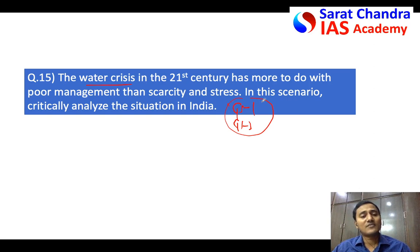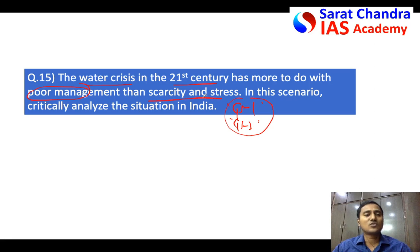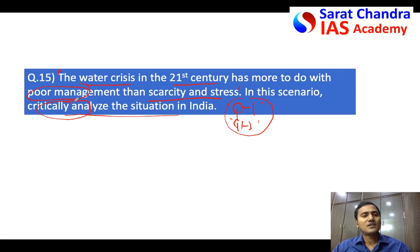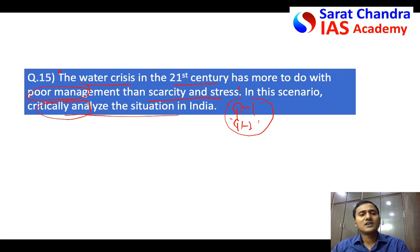The question states: 'The water crisis in the present generation is more because of poor management and less because of scarcity and stress.' Explain this statement in about half a page, then critically analyze the situation in India. Critically analyze means you have to discuss the situation of water crisis in India — not completely in a negative light. Write some positive things about what the government is doing, and more points on the problems. You have to write both sides.